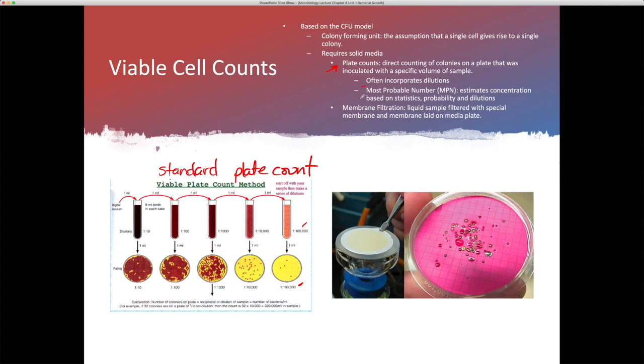There's another method called the MPN, or Most Probable Number. This is an estimate of concentration based on statistics and dilutions. And then we have what's called the membrane filtration method, where we would take one of these dilutions, and we would run it through a membrane filtration type of mechanism.